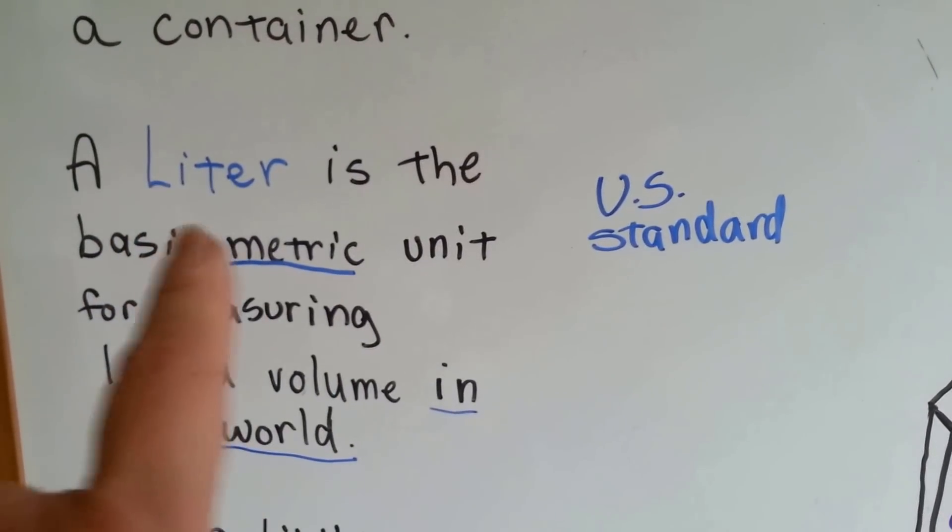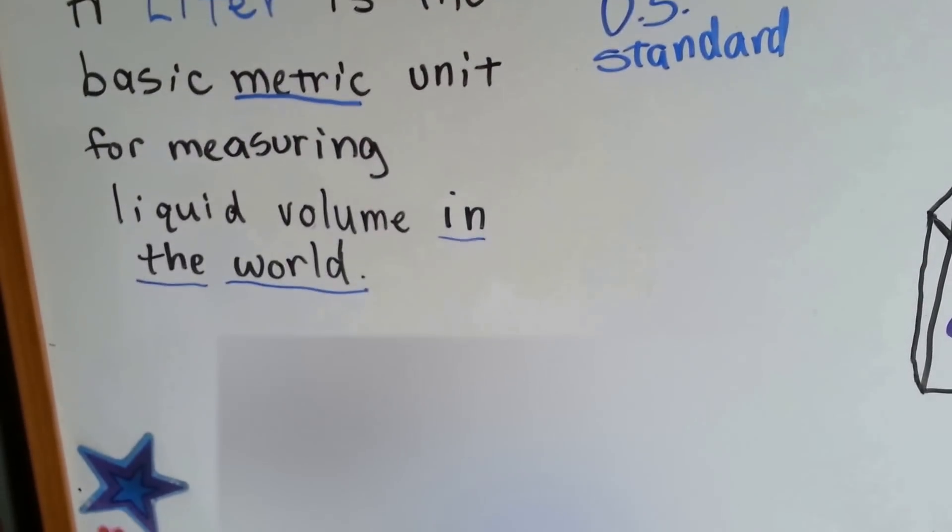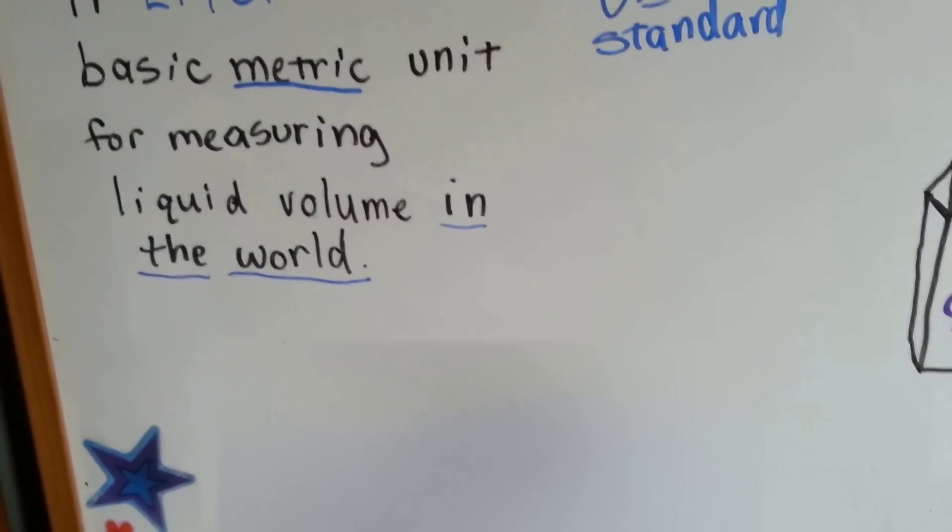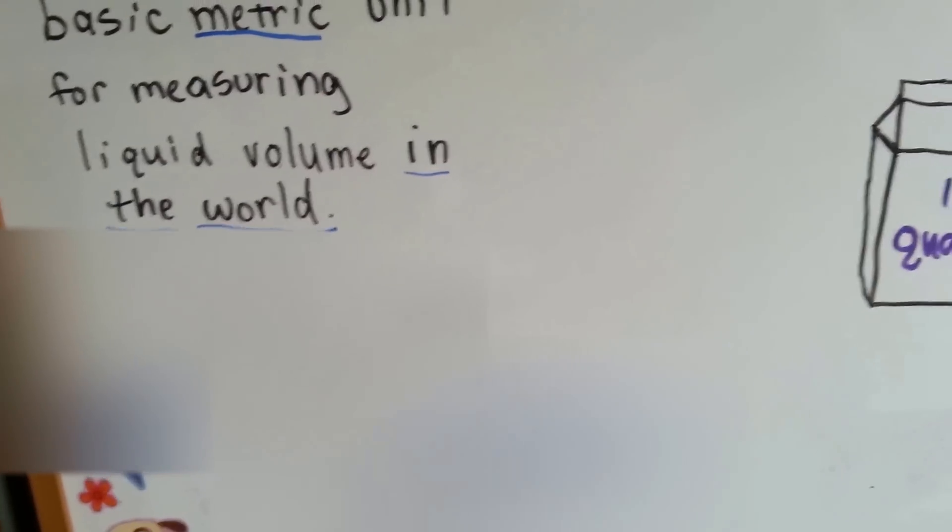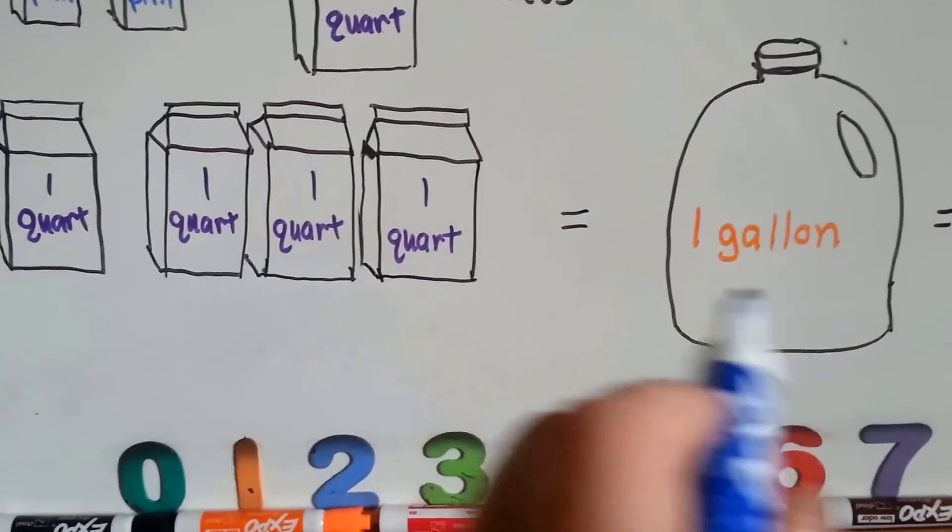A liter is a metric measure of liquid volume. There's a little more than three and a half liters in one U.S. gallon. They have 3.785 liters to a gallon, where we have four quarts to a gallon.